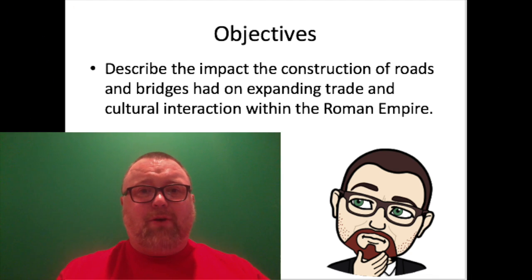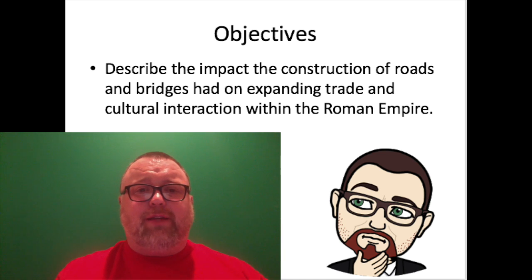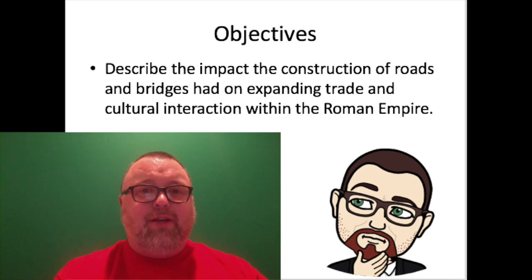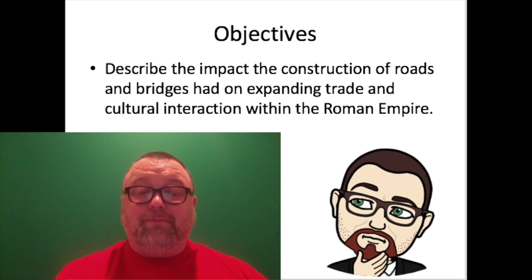If you're having any difficulties accessing or posting anything, please reach out and we'll sort it out. Last time we talked about the Roman ability to use rivers and the sea to spread their influence. Now we're going to talk about land and Roman roads. Your objectives for this lesson: you should be able to describe the major impacts that the construction of roads and bridges had on expanding trade and cultural interaction throughout the Roman Empire.